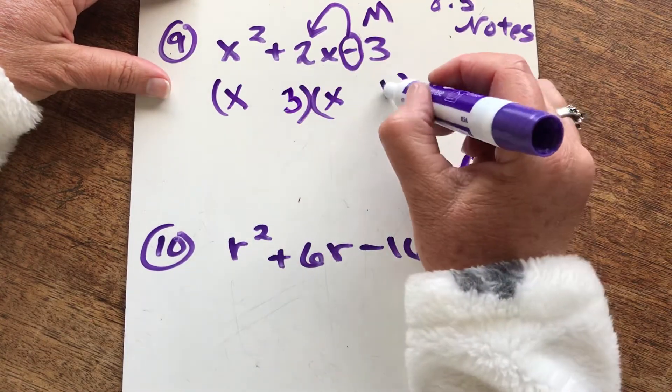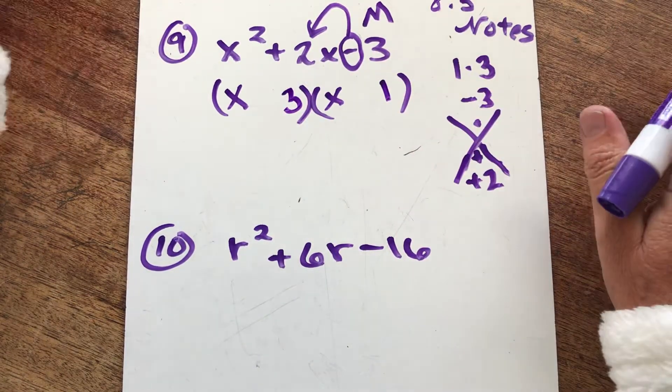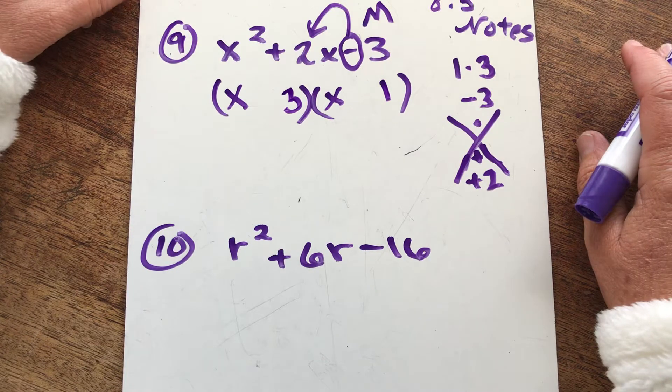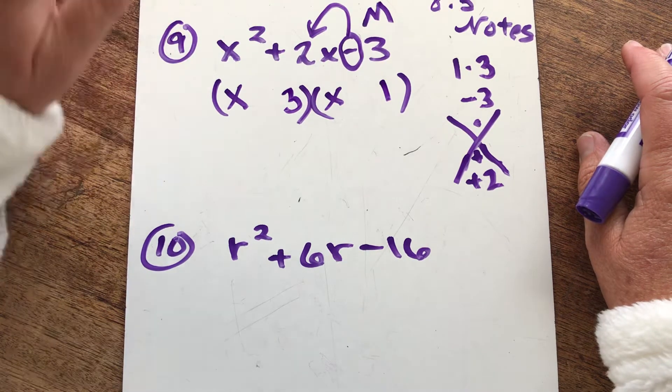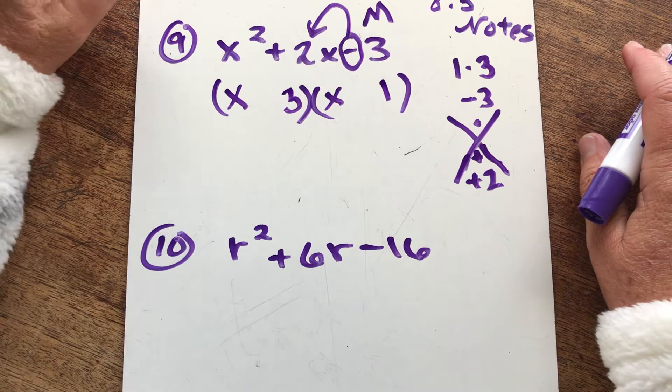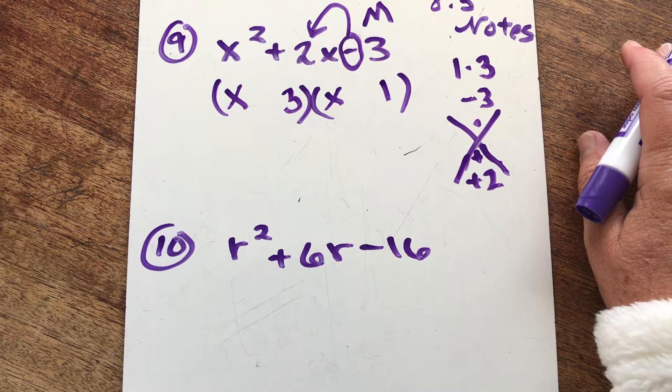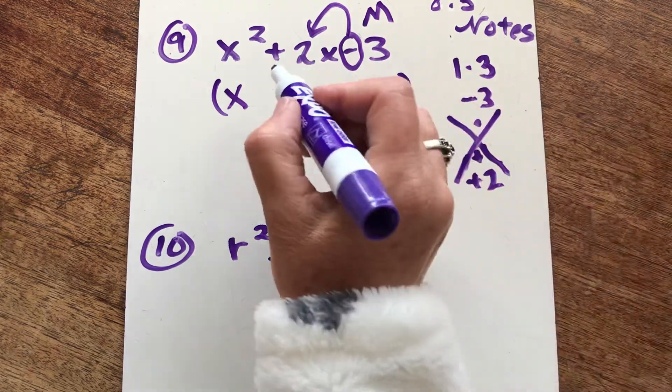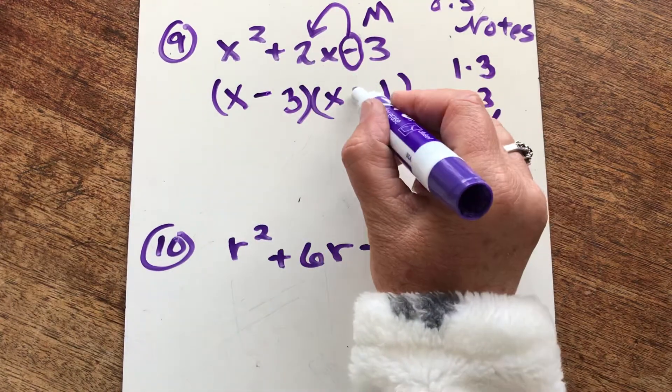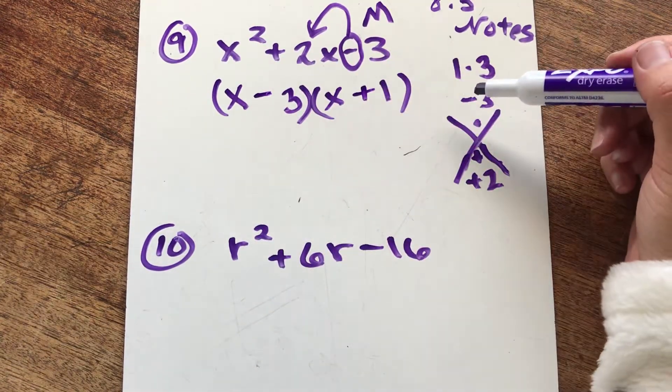I'm going to do the three first and then the one. The three and the one, the order doesn't matter, but the signs that you put with them definitely matter. So I'm going to get a positive two. Let's see what happens if I put a negative here and then a positive. Let's see if that works.